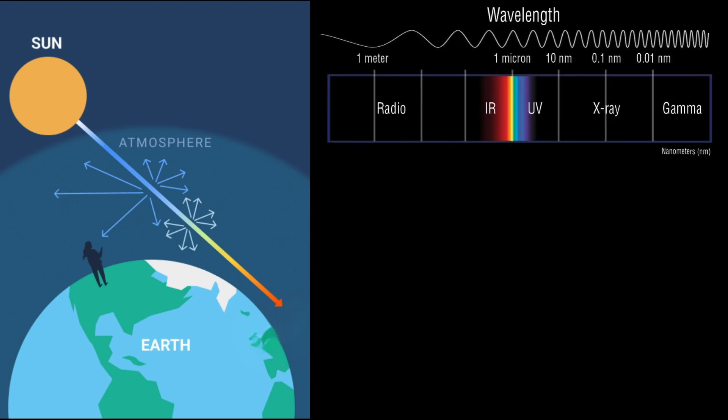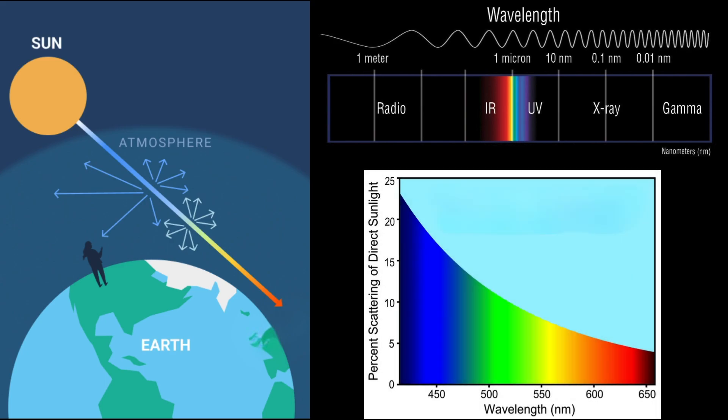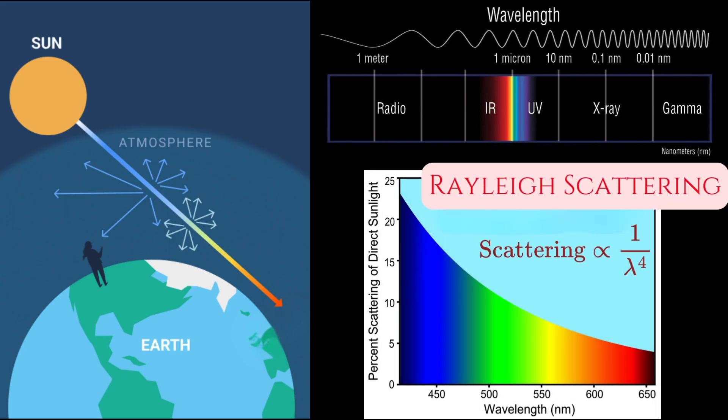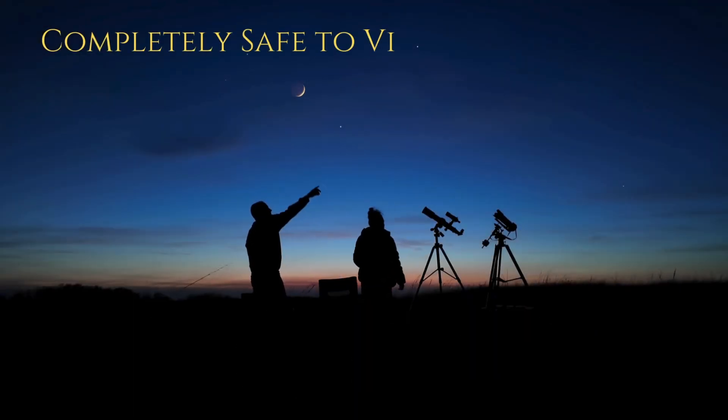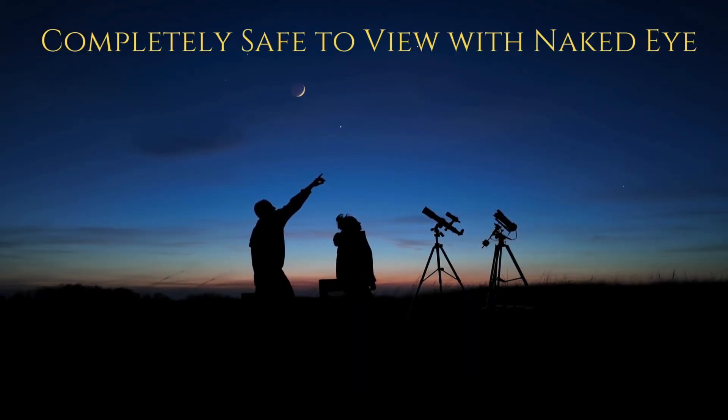As it does so, blue light, which has a shorter wavelength, gets scattered away due to Rayleigh scattering, leaving only the oranges and the reds to paint the lunar surface. And unlike a solar eclipse, this one is completely safe to watch with your own eyes. No special glasses are needed.